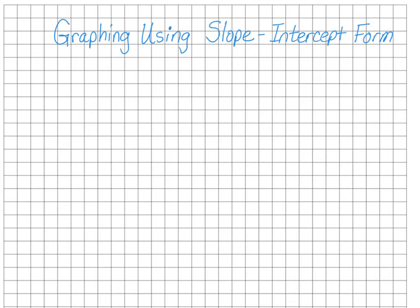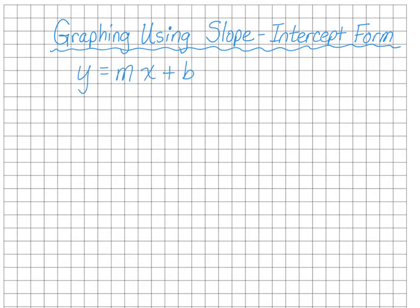Hello, Math 8 students. Today I'm going to be teaching you graphing using slope-intercept form. It would be very helpful if you had graph paper for this lesson, but if you don't, you can just draw some graphs on binder paper instead. Please find a clean sheet of graph paper or binder paper and write this title at the top. The slope-intercept form is y equals mx plus b.